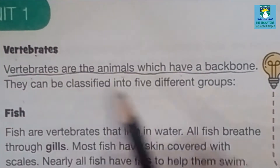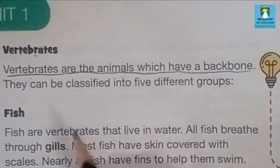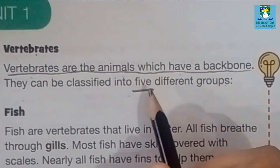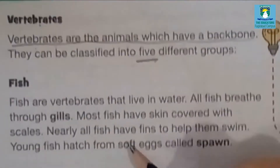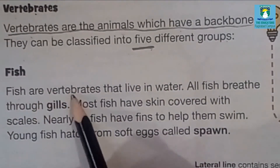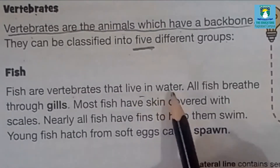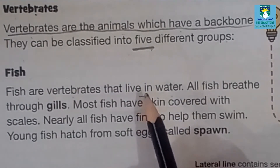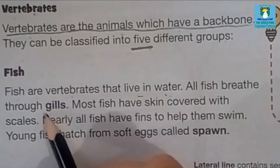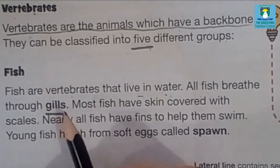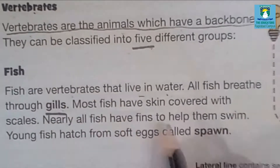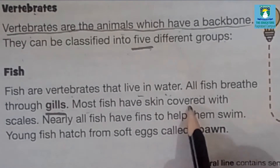They can be classified into five different groups. The first group is fish. Fish are vertebrates that live in water. They have a backbone. All fish breathe through gills — gills are small holes present on the body of the fish that help in breathing. Most fish have skin covered with scales.